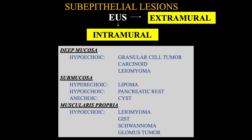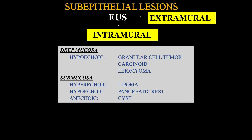Lesions arising from the deep mucosa are hypoechoic and are either a granular cell tumour, carcinoid tumour, or a leiomyoma. Submucosal lesions, on the other hand, can be either hyperechoic — which is a lipoma — hypoechoic — which is a pancreatic rest — or anechoic — which is a cyst.